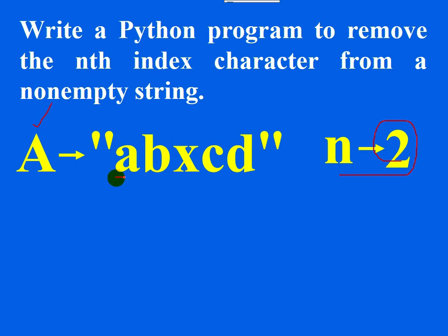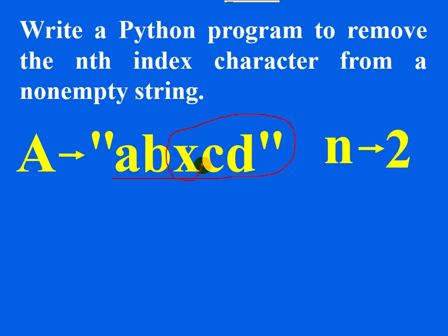For the first character, the index is 0 and the position is 1 (index + 1). For the second character, the index is 1 and the position is 2. For the third character, the index is 2 and the position is 3. So with n=2, I want to remove the second index character — 'x' must be removed — giving the answer 'ab' followed by 'cd'.